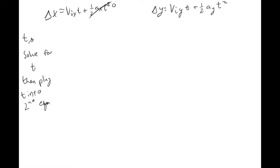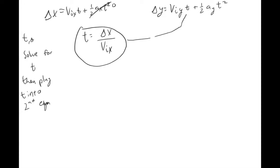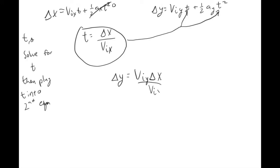If I solve the equation on the left for t, I get t equals delta x over v-initial-x. Now I'm going to take that t and substitute it into the equation on the right wherever I see a t. So the new equation on the right looks like: delta y equals the initial y times (delta x over v-initial-x) plus one half times a-y times (delta x over v-initial-x) squared.